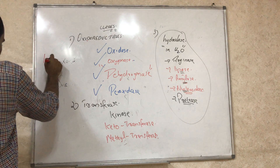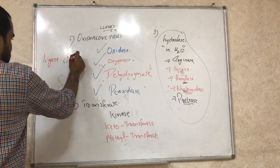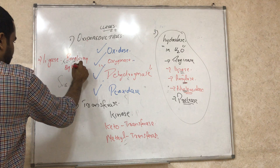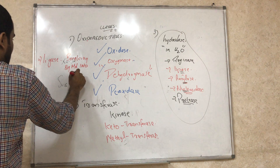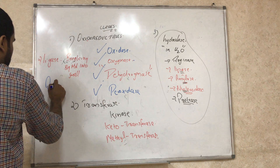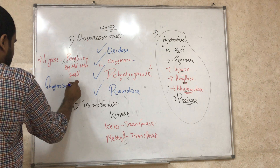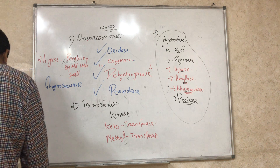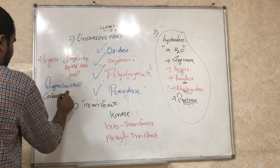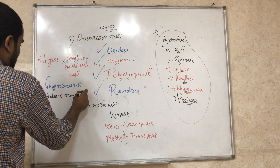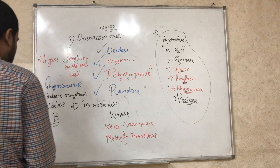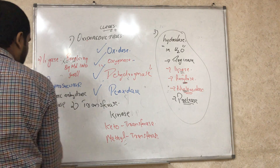The next class is lyases, which break big molecules into smaller ones. Examples include arginosuccinase from the urea cycle, carbonic anhydrase forming carbonic acid, and aldolase B.